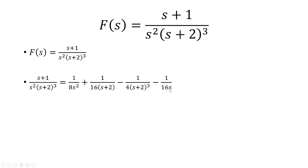So this is four different fractions. We have 1 over 8s squared, plus 1 over 16(s+2), minus 1 over 4(s+2)³, and then minus 1 over 16s.